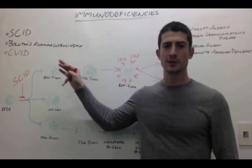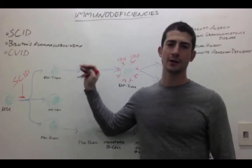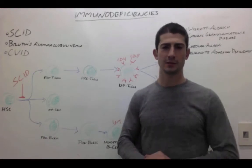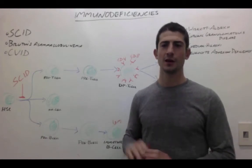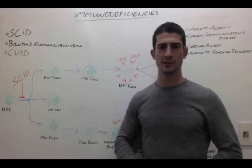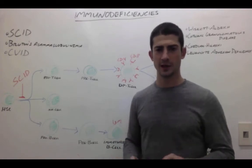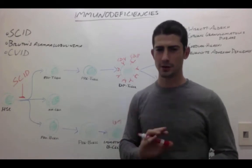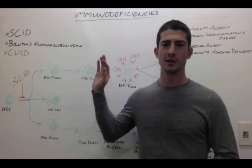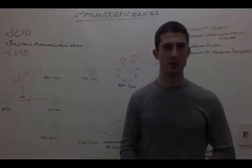SCID is caused most commonly by an IL-2 receptor defect, which is X-linked recessive. It can also be caused by an adenosine deaminase deficiency, which is autosomal recessive, but it's far less common. There are other causes as well, but the IL-2 receptor defect is most common.